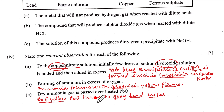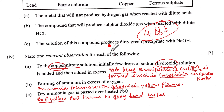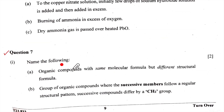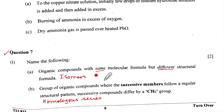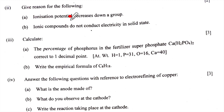Questions 3, 4, 5, and 6 are finished — four questions of section B complete. Questions 7 and 8 are the remaining choice questions. Question 7, part one: name the following. A — organic compounds with the same molecular formula but different structural formula are called isomers. B — a group of organic compounds where successive members follow a regular structural pattern and differ by a CH₂ group is called a homologous series. Part two: give reasons. A — ionization potential decreases down the group.